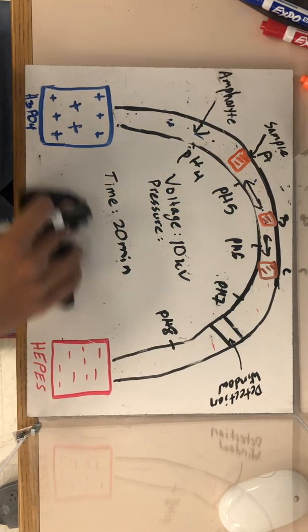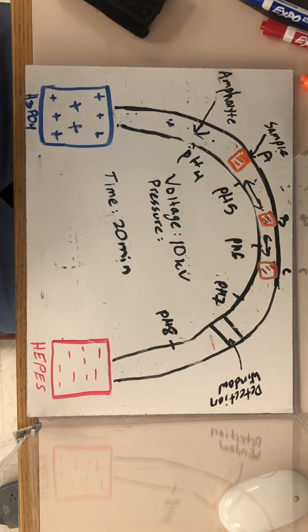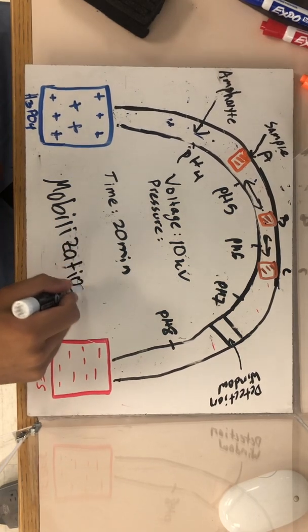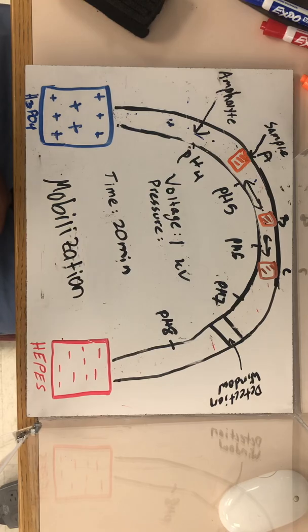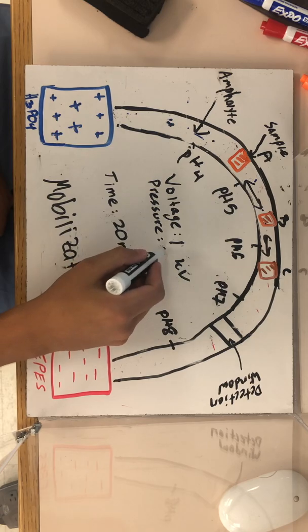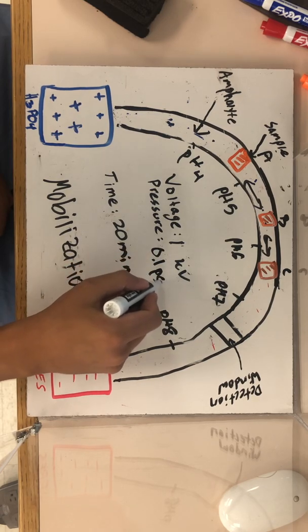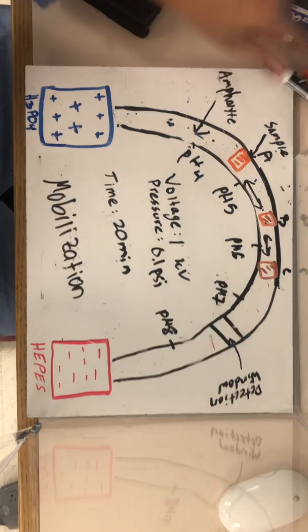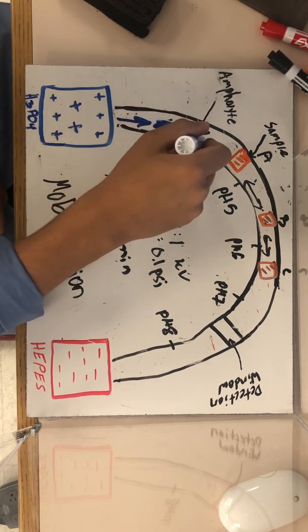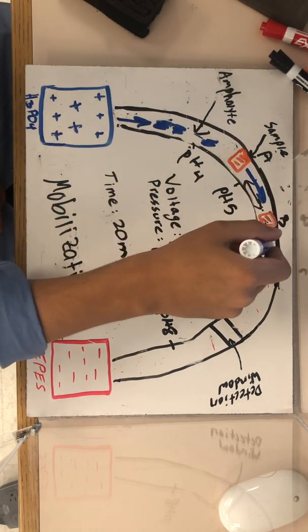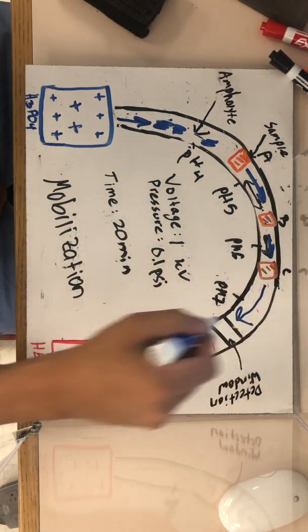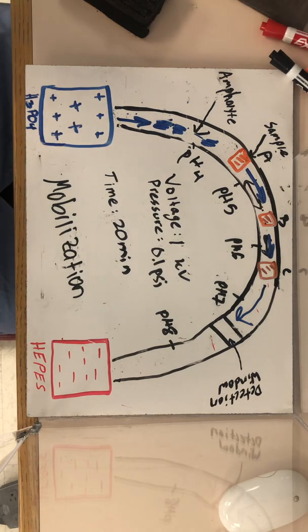Well, the way we kick them out is through what is called the mobilization stage. Where you're going to kick down the voltage to about one kilovolt, which is just enough so that this gradient doesn't disappear, so that the ladder stays the same. And at a very small pressure of 0.1 psi about, you're going to start inserting your H3PO4 into the catholic. And it's going to kick everything out towards your outlet side through the detection window,